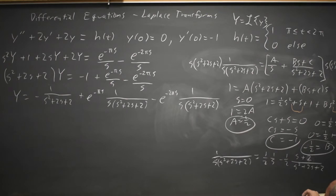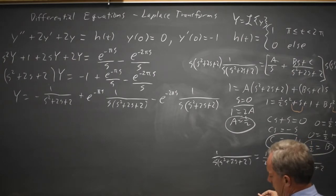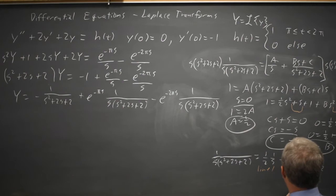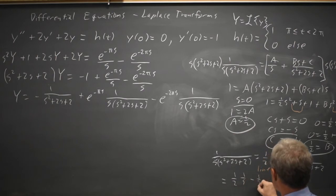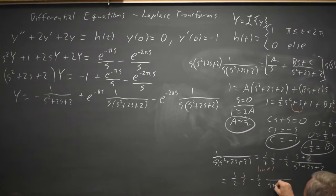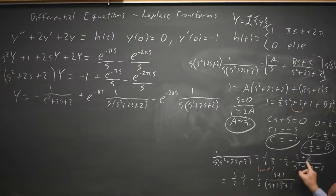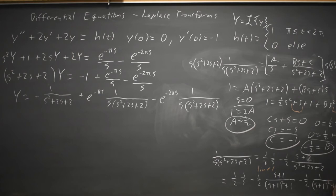This doesn't quite match my table, so looking at the table I see that 1/s is line 1. And (s plus 2) over (s squared plus 2s plus 2) does not quite match my lines, so let me rewrite it. I want my denominator to be (s plus 1) squared plus 1, and the numerator should be (s plus 1), but I actually have an s plus 2, so that leaves a remainder of 1. So it becomes (1/2)(1/s) minus (1/2)(s plus 1) over ((s plus 1) squared plus 1) minus (1/2)(1 over (s plus 1) squared plus 1). Now this matches the expressions I'm trying to match.